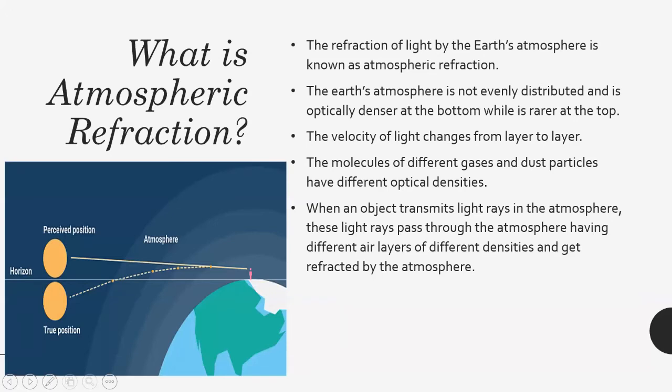Now if a two or three mark question comes - explain what do you mean by atmospheric refraction - you can go through these points. Refraction of light by the Earth's atmosphere is known as atmospheric refraction. You can draw a small diagram if required - the Earth and show layers, three four layers above the Earth's surface showing that this is atmosphere, and show a celestial body which is emitting light and light which is coming from this body is coming in a curved form, bending and coming to the Earth.